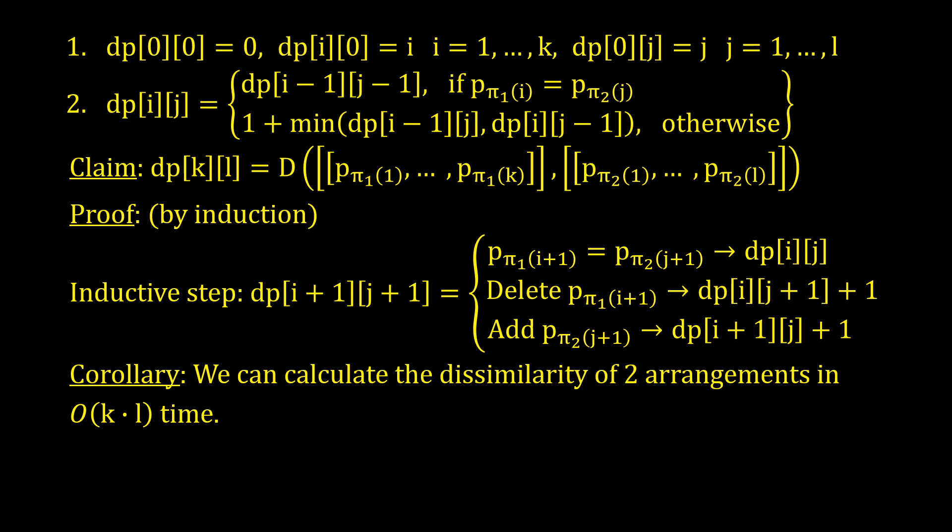As for the inductive step, if the i+1-st element of the first arrangement is the same as the j+1-st element of the second arrangement, then the problem reduces to dp[i][j] since no further action is needed.